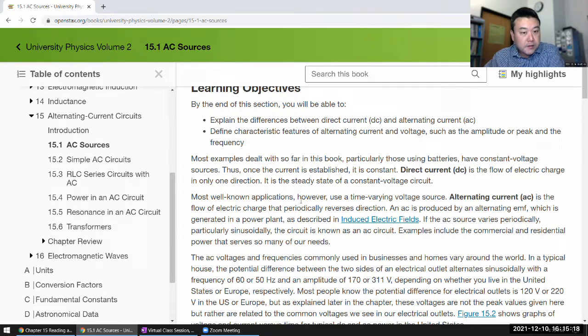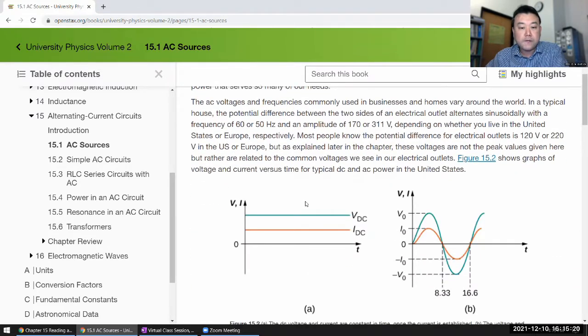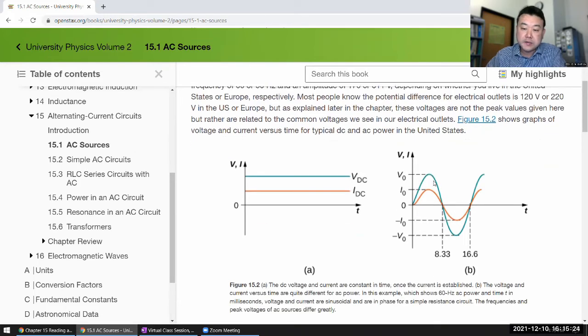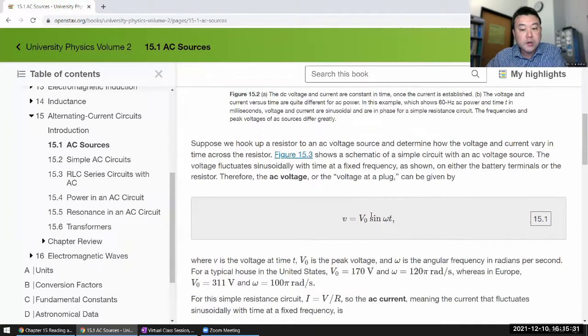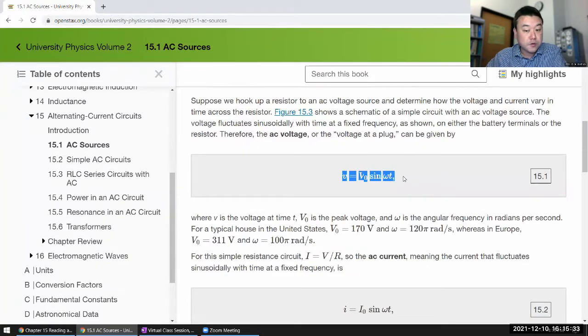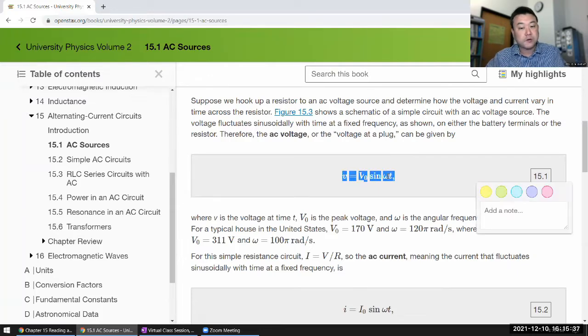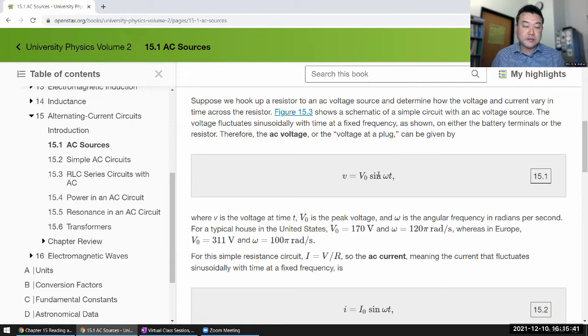In an AC circuit, you have a voltage source or a current source that imposes this kind of oscillation. This oscillation is not something that's naturally arising in the circuit. We have an external source that's driving the circuit at a particular frequency or angular frequency. That's really the biggest distinction between AC circuits and time-dependent circuits.